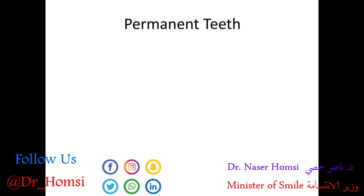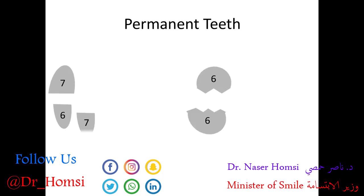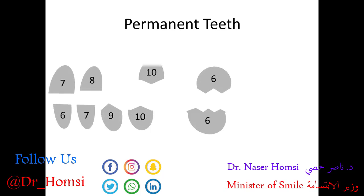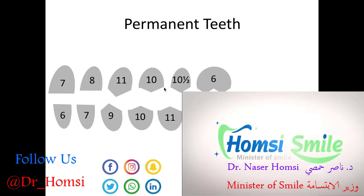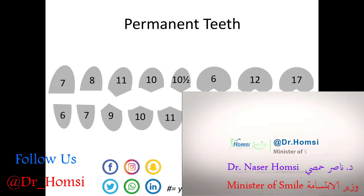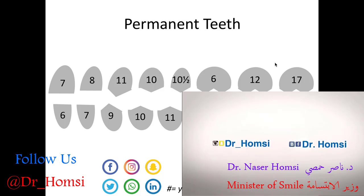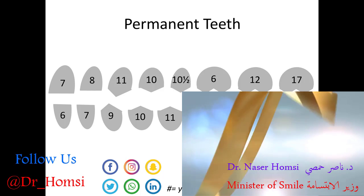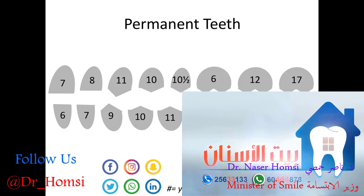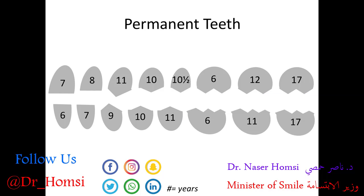Next we'll talk about the adult or permanent teeth. All eruption times are again straight from the ADA website, and this time all the numbers are in years, not months. These teeth also tend to erupt within a six-month window, but again, learn a single number for each tooth for the board exam and focus most importantly on the sequence of eruption.